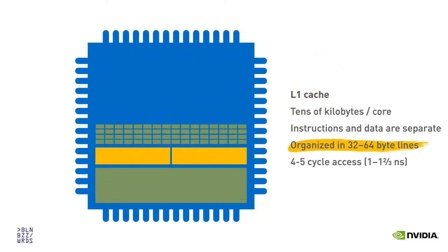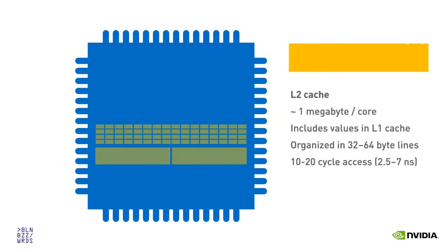A key aspect of L1 cache is that it's organized in lines — you can't load a single value into cache. To load a value, you actually load the surrounding 32 or 64 bytes. This is very fast precisely because of these restrictions and because it's small. The L2 cache is around a megabyte per core, also organized in lines, and about two to three times slower than L1 cache.